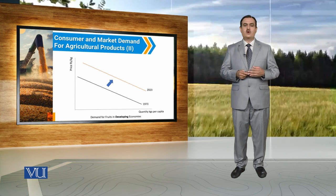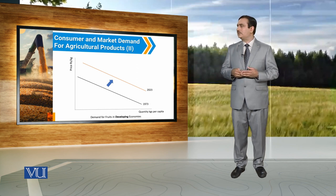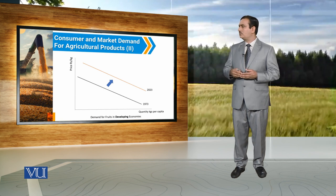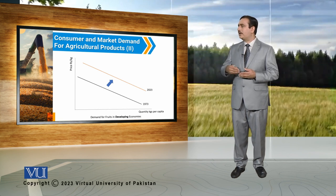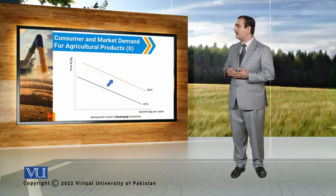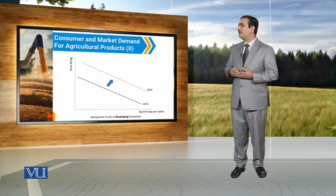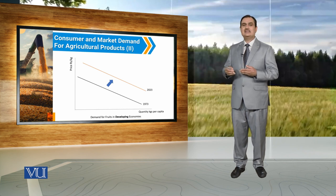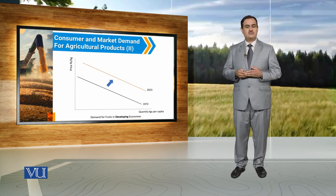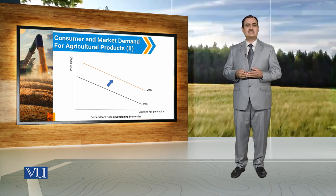Similarly, if we observe demand for fruits in developing countries, we can see a significant increase in demand for fruits from 1973 to 2023. The movement from the black color demand curve in 1973 to the orange color demand curve indicates increased demand for fruits in 2023. This increase in demand is because of awareness about the positive impacts of food on the health of individuals.